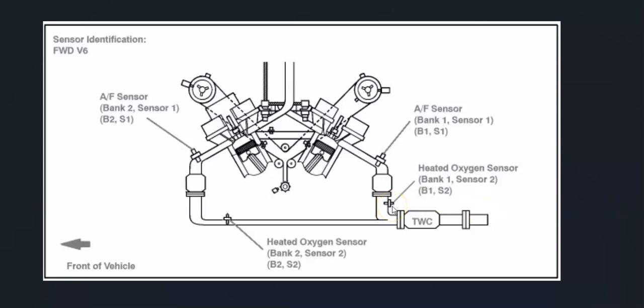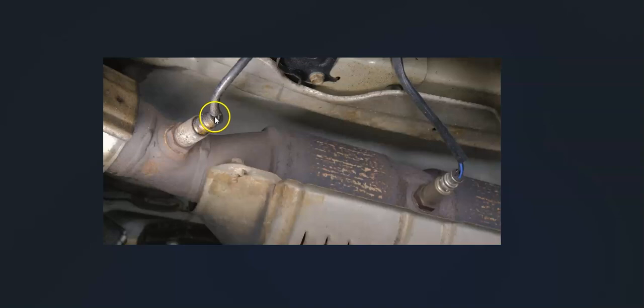For example, this is a 2007 Camry with a 3.5 liter V6. And as you can see, bank one sensor two is going to be right here. And the basics of what's going on with these sensors is that sensor one is going to be called the upstream oxygen sensor. It's going to be located before the catalytic converter. And sensor two is going to be called the downstream oxygen sensor. It's going to be located after the catalytic converter.